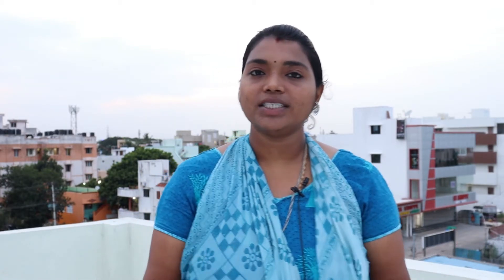The next thing is partial withdrawal. Partial withdrawal is allowed from the 7th financial year onwards. You can withdraw up to 50% of the balance at the end of the 4th preceding year or the year immediately preceding the withdrawal year, whichever is lower. You can do partial withdrawal once per year.